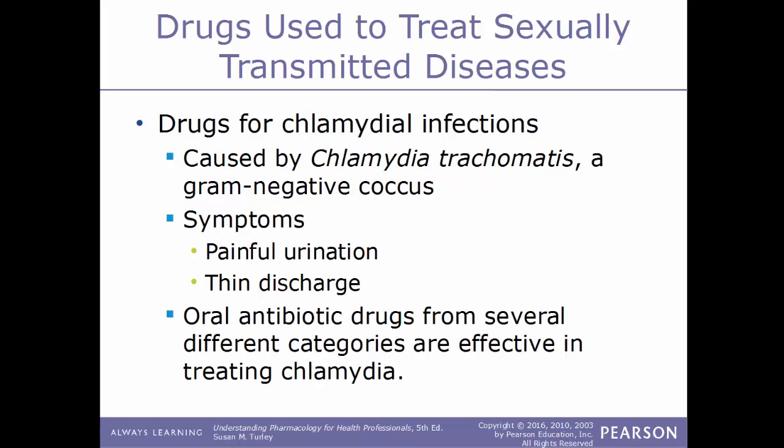Another type of STD is chlamydia. Chlamydial infections are caused by the gram-negative coccus bacteria Chlamydia trachomatis. Symptoms include painful urination and a thin discharge. Oral antibiotics from several different categories are effective in treating chlamydia.